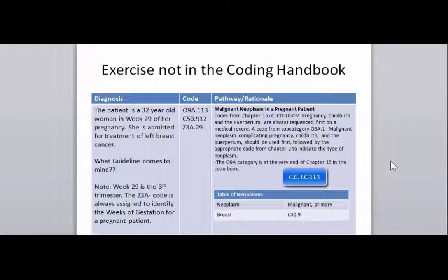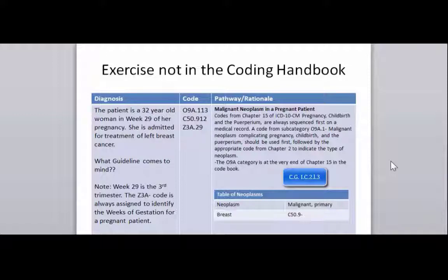We're going to use O9A.113 as our principal code because Chapter 15 codes — the pregnancy or OB codes — are most often your principal. There are very few instances where they're not. Then we identify the cancer: C50.912, and of course our Z code indicating our weeks of gestation. In the table of neoplasms, if you look up breast you get C50.9 with a dash, meaning additional characters are needed. We're going to assign the character for her left breast. I just want you to be aware that there is a guideline specific to a malignant neoplasm in a pregnant patient.